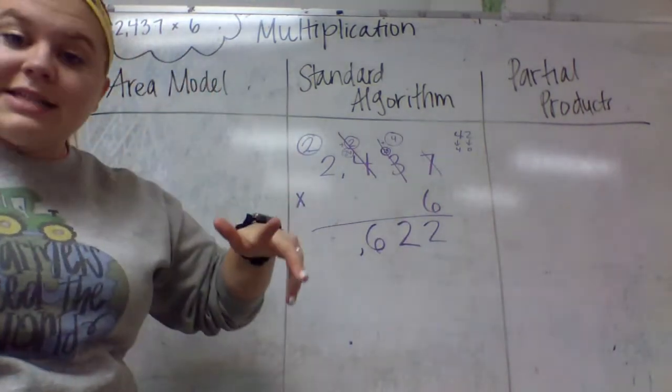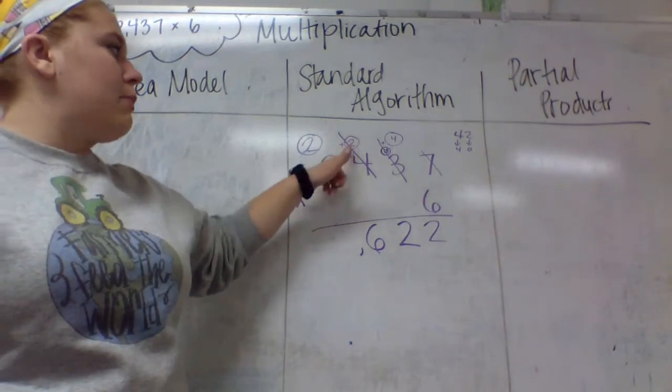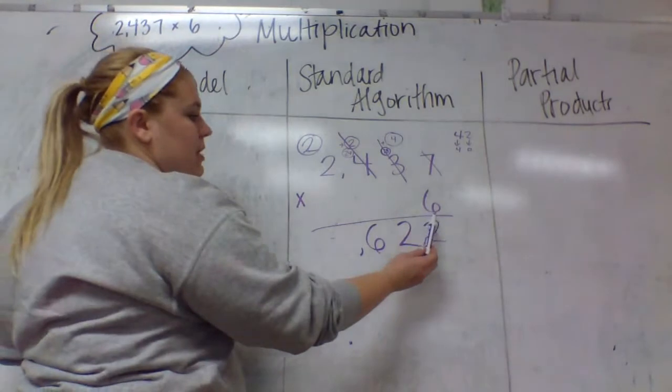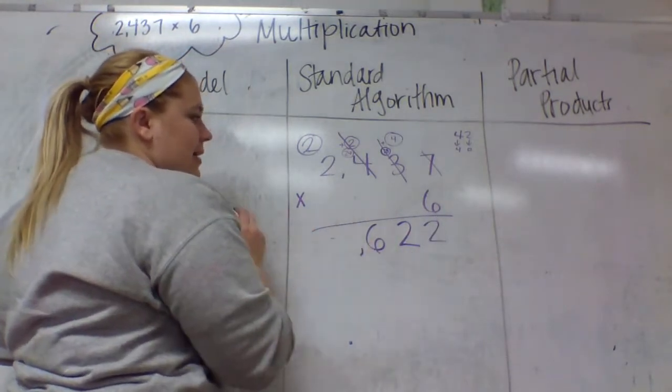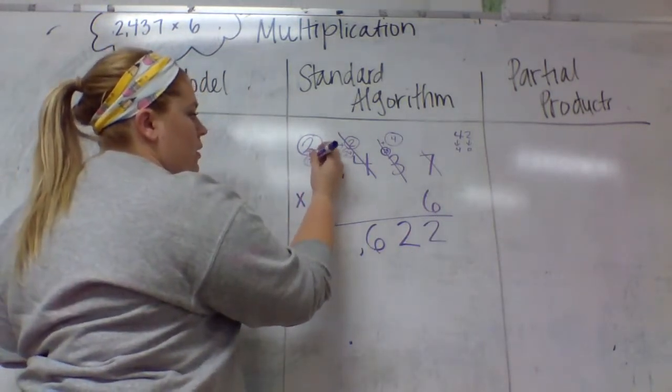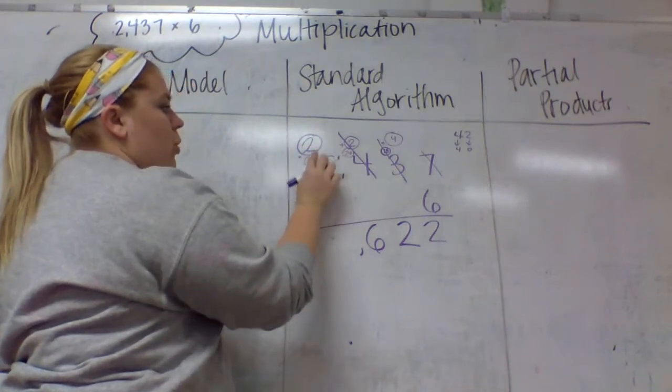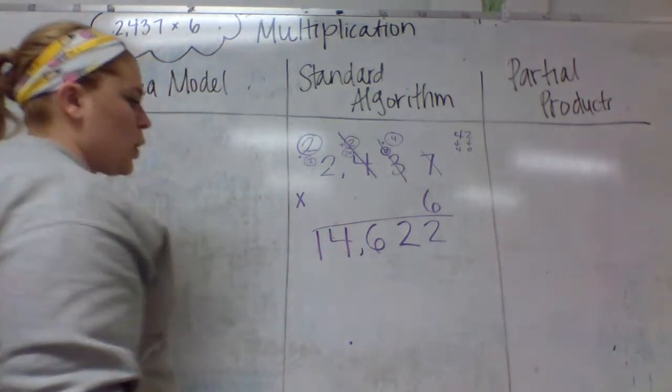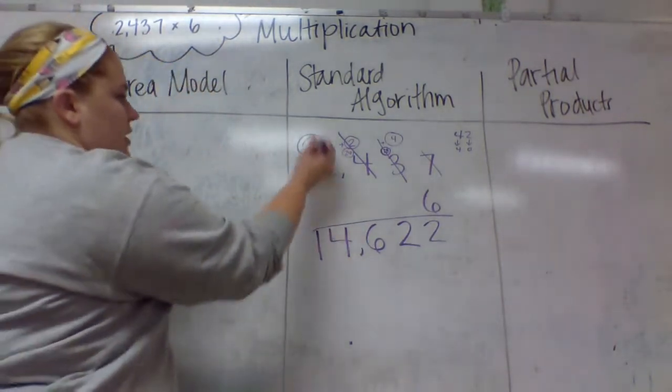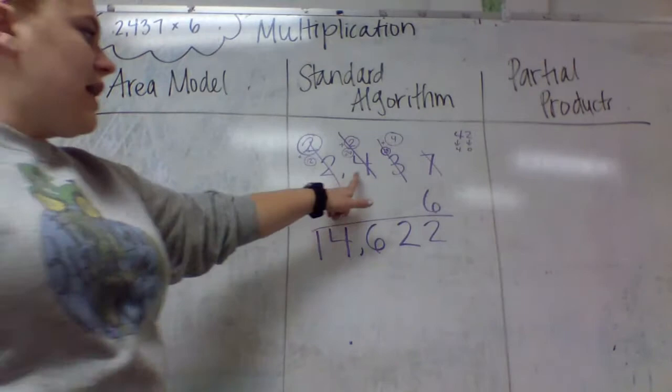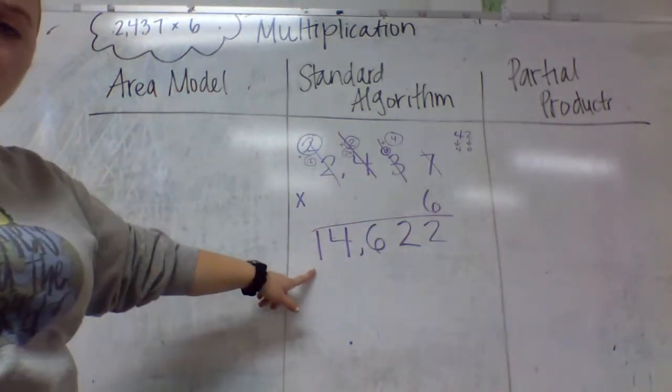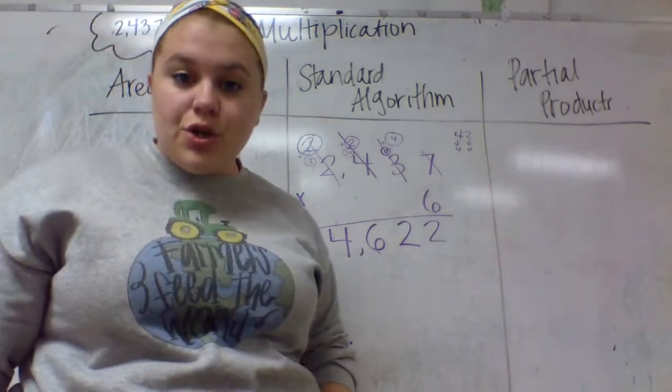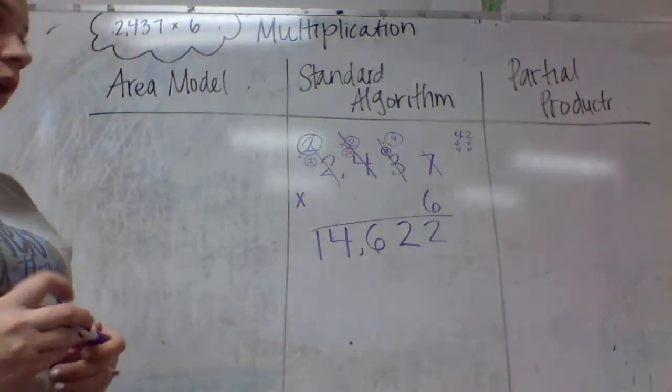One of the biggest mistakes that people make when they do this is they try and multiply these numbers. We need to add them. My last step for multiplication. Six times two is 12. I'm going to do 12 plus two, which I know is 14. I'm finished with this two. So 2,437 times six, we have figured out to be 14,622. That is using standard algorithm.